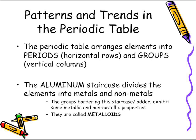We also have something called the aluminum staircase. The aluminum staircase divides the elements into the metals and the non-metals. There are groups bordering the staircase or the ladder and they exhibit some metallic and some non-metallic properties. These ones are called the metalloids.